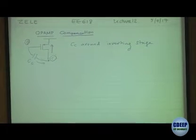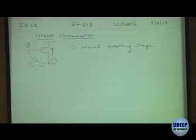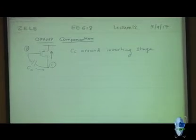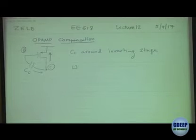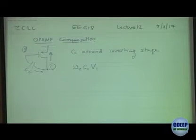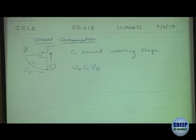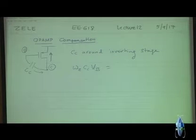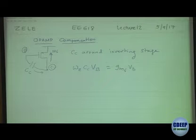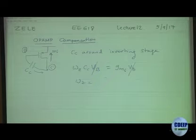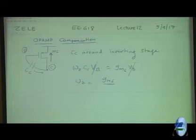Under that condition, the current flowing here equals the current flowing up here. The current flowing through CC will be omega_Z times CC times VV, and on the other side you have the current flowing through PMOS M6, which is GM6 times VV. So VV cancels and we get omega_Z equal to GM6 divided by CC.